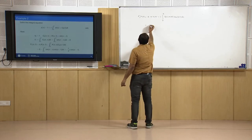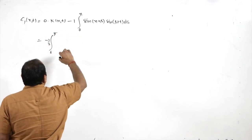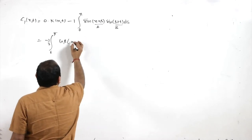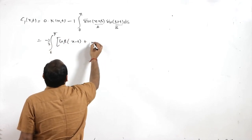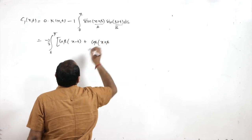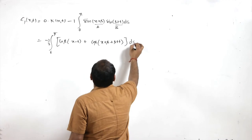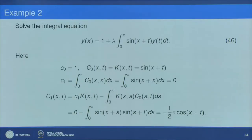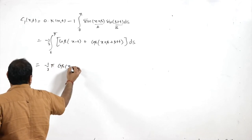The integral becomes −∫₀^π sin(x+s)sin(s+t)ds = −½∫₀^π[cos(x−t) − cos(x+2s+t)]ds. Evaluating this, we find that C₁(x,t) = −(π/2)cos(x−t).